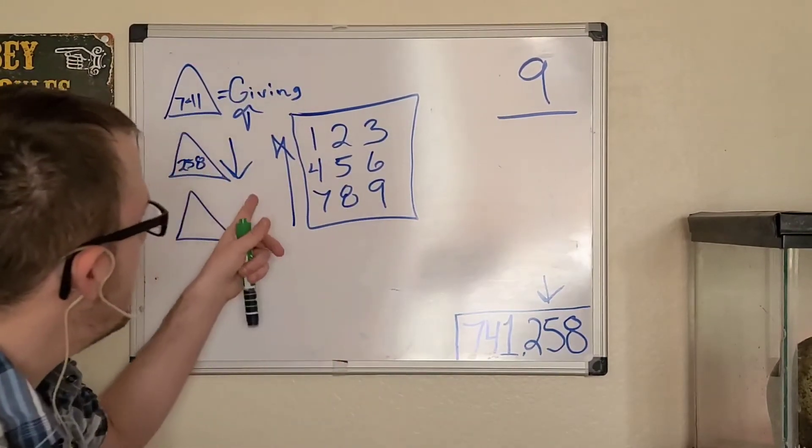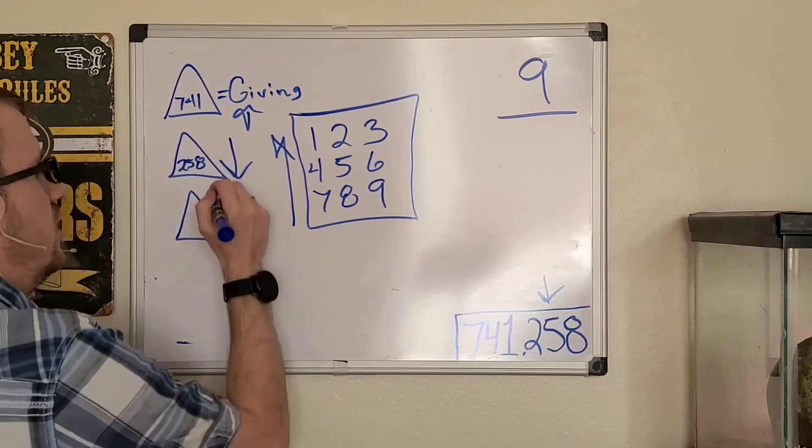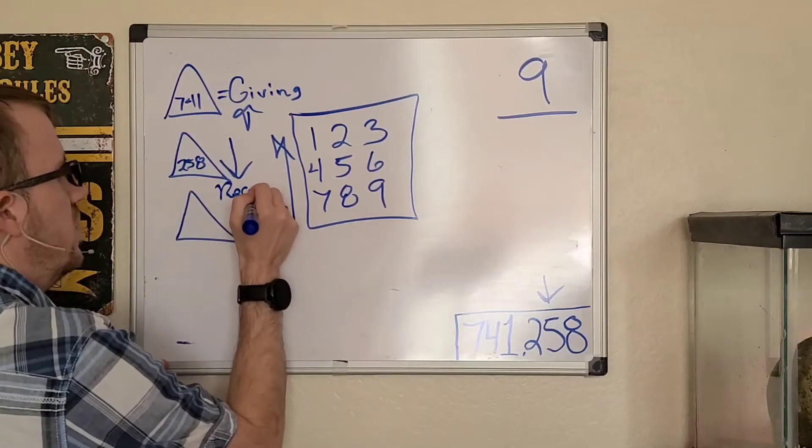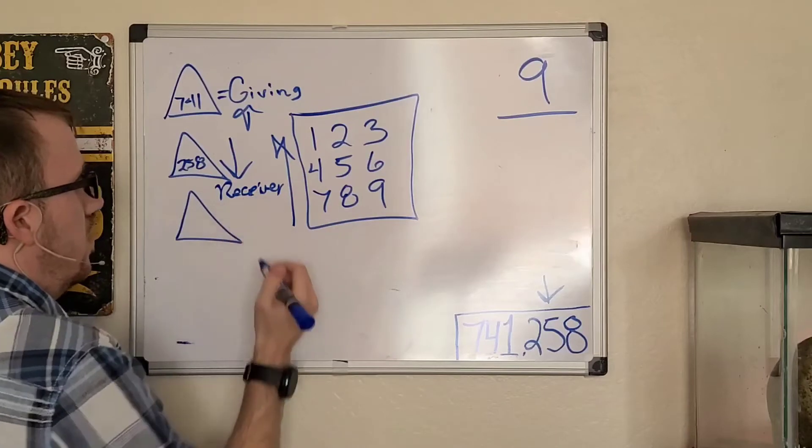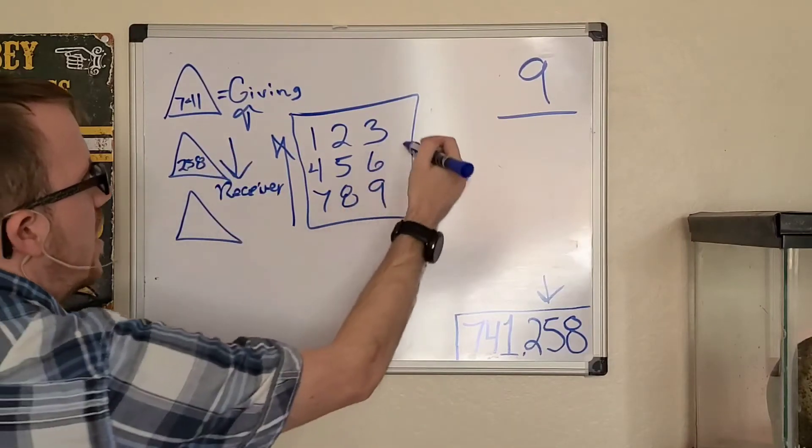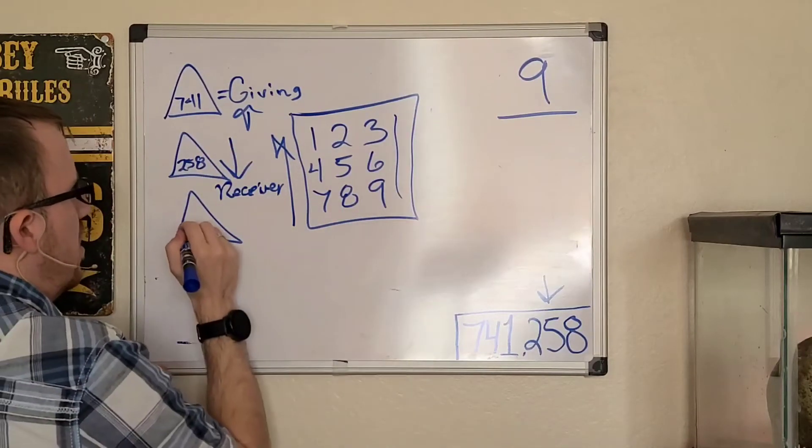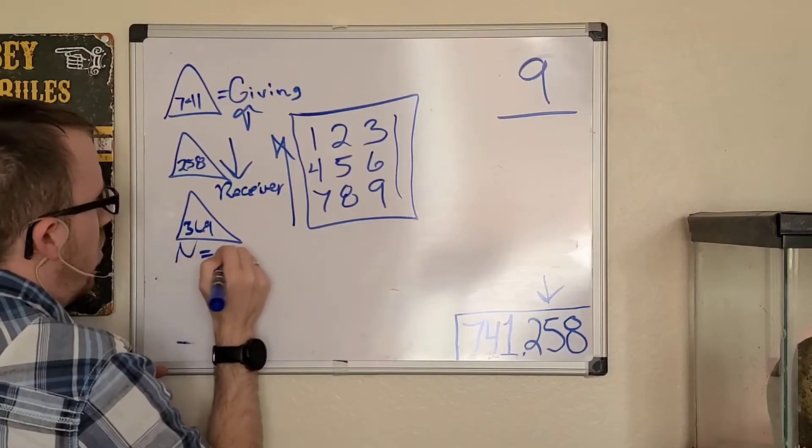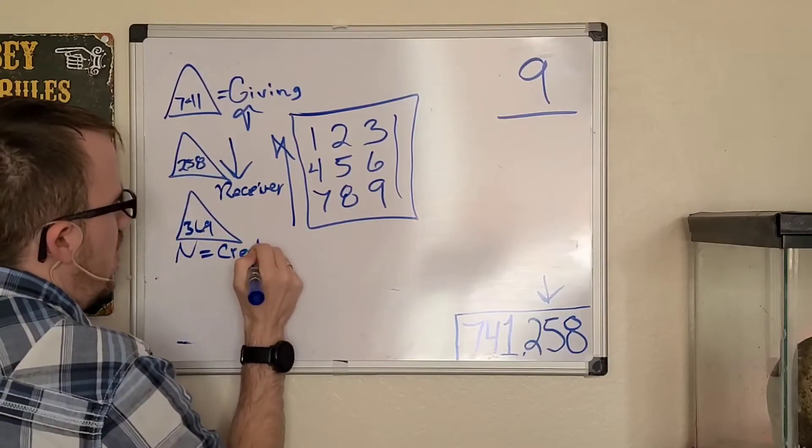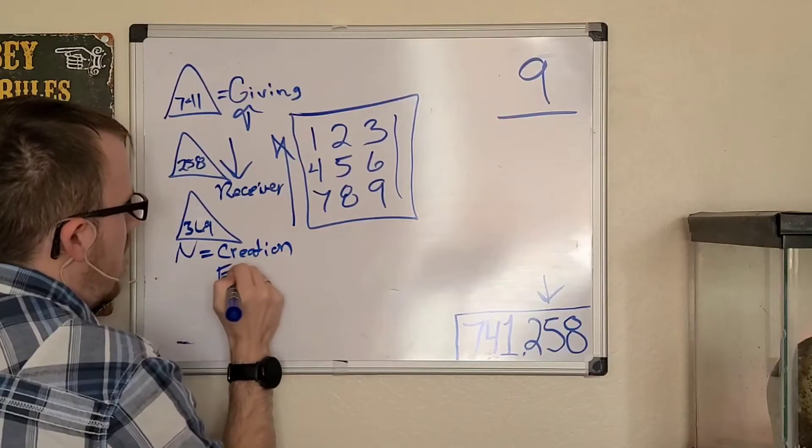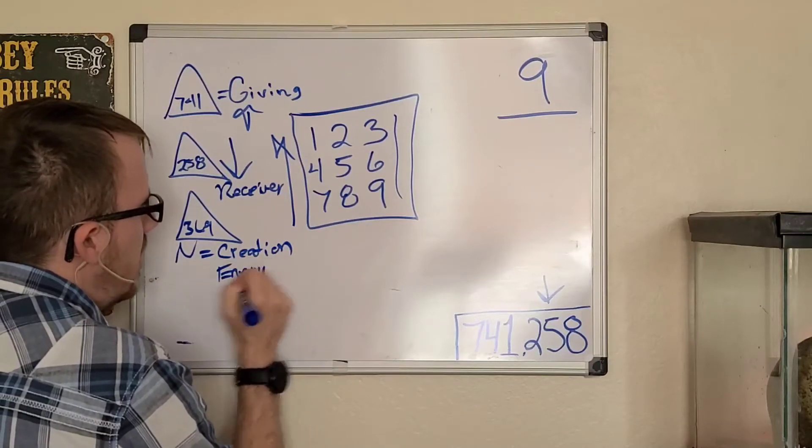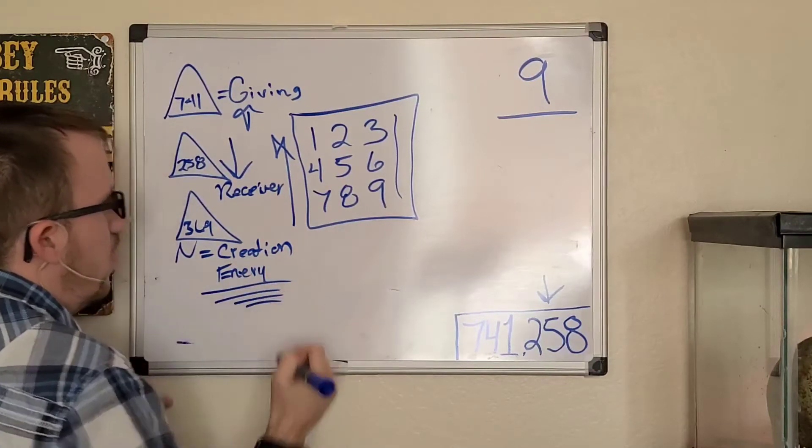What it is telling you is that it is the receiver of the giving energy. It is the receiver going that way. And that leaves you with 369, which are going to be neutral. They are the creation energy, do not care what is actually being created because it is all neutral.